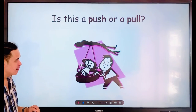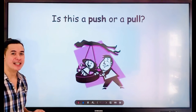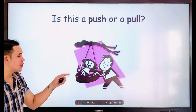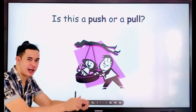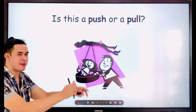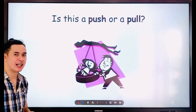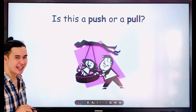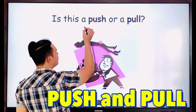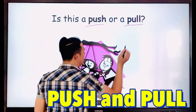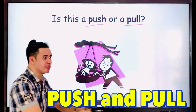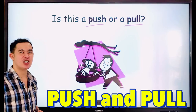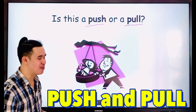The baby and the dad — the dad is pushing the baby, pushing back and getting back. Is this a push or a pull? Very good — this is both pushing and pulling, because the dad pushes and then gets the baby back. That is all about pushing and pulling.